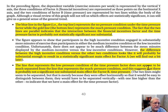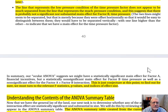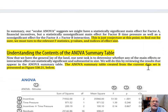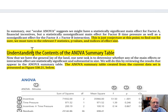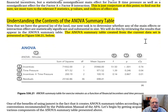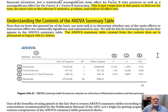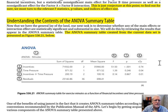That is what we have at the bottom of page 40. At the top of page 41, this is just conjecture at this point. To find out for sure, we have to turn to the relevant F statistics, p-values, and indices of effect size. Right now, we've just eyeballed the results. We won't know for sure what's significant until we look at the section 'Understanding the Contents of the ANOVA Summary Table.' The ANOVA summary table created from the current data set is presented as Figure 530.21.